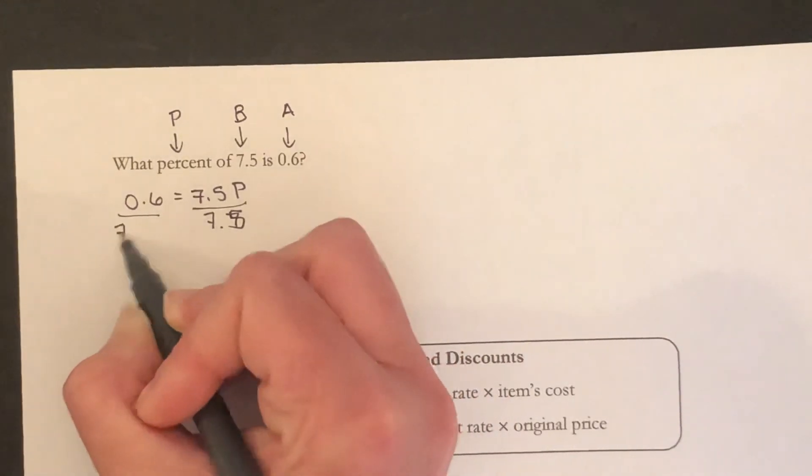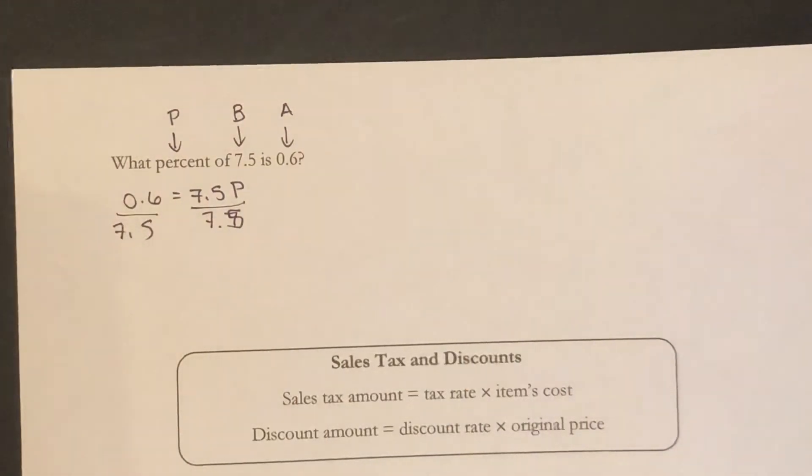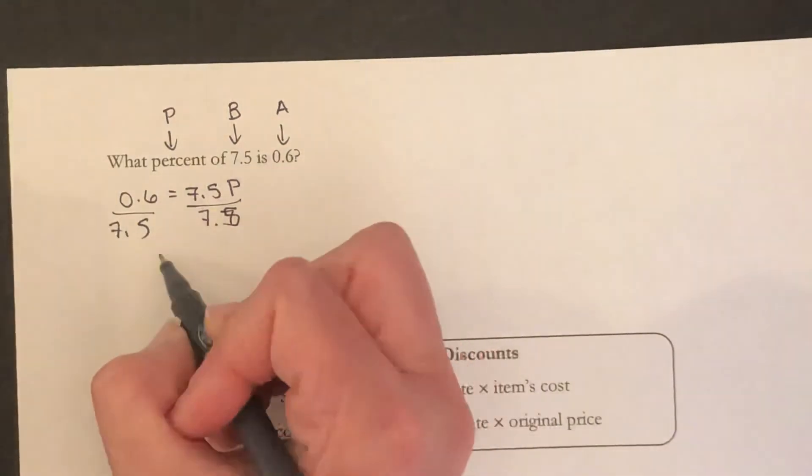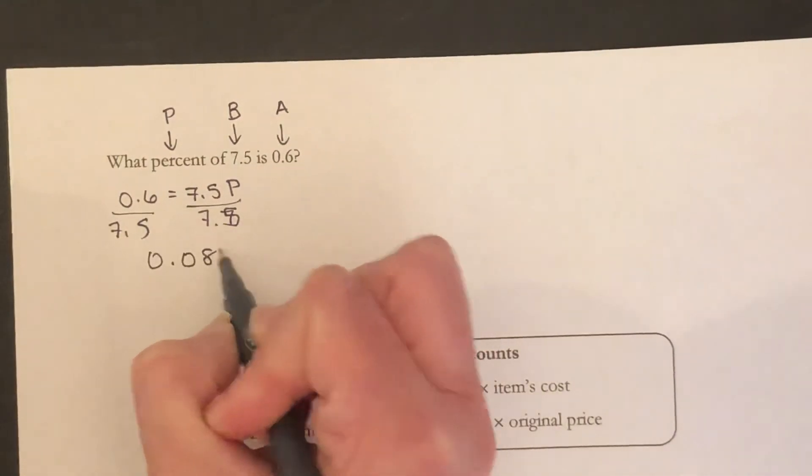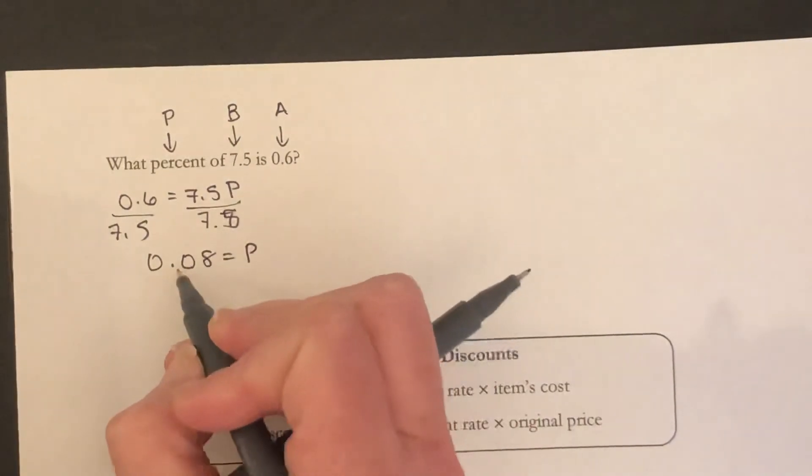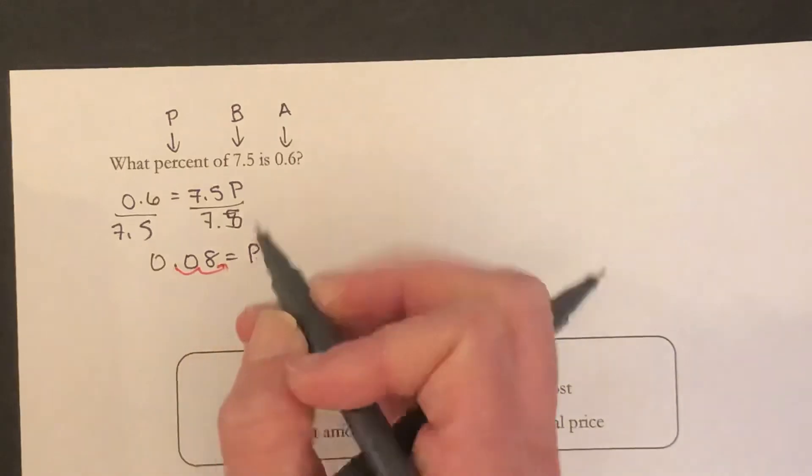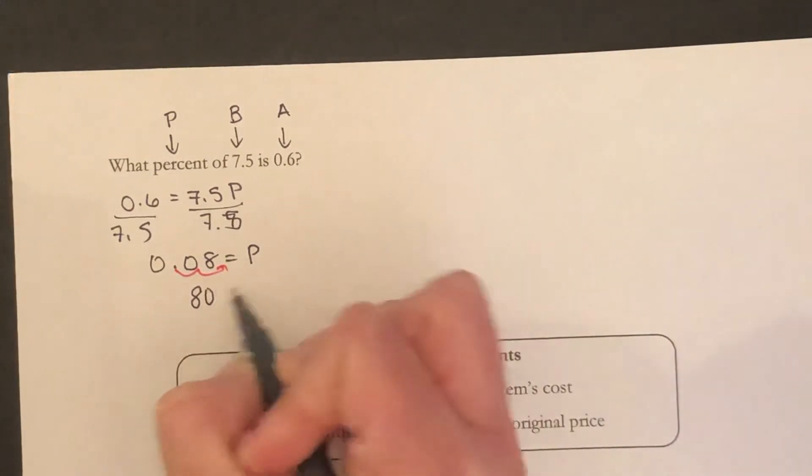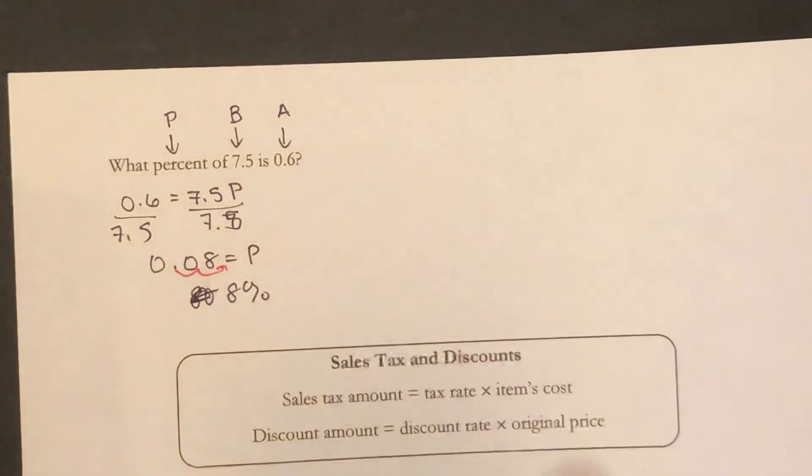0.6 divided by 7.5, we get 0.08 is equal to P. Switch it back to a percent by moving this over here. And so we get 8%.